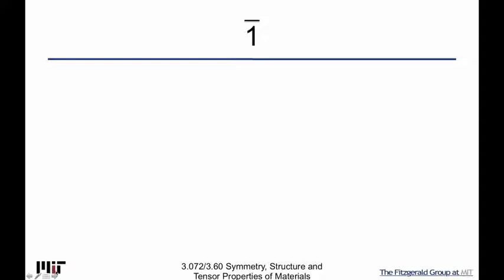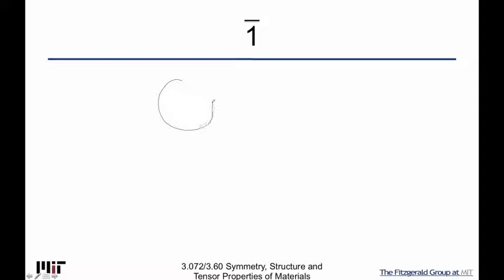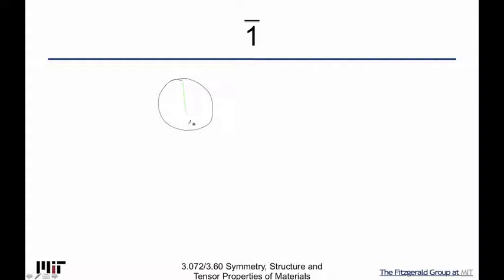1-bar is pretty straightforward in the sense that we don't have any more complicated rotational axis. So we can just go directly to our figure. I'm just going to draw a line here for purposes of guiding my drawing and to show what's happening. We'll use green because it's a little fainter.